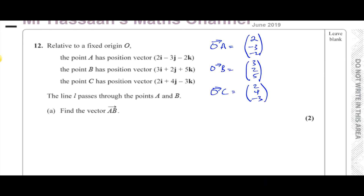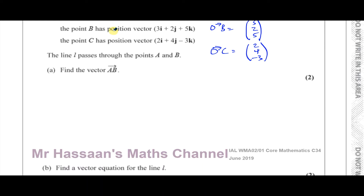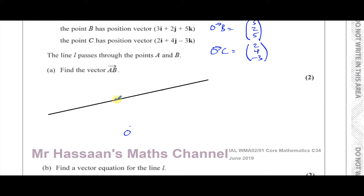Now we need to find the vector from A to B. We know the vectors from O to A and O to B. Since these are three-dimensional we can't draw them accurately, but I'll make a little diagram: O, A, and B, with line L passing through points A and B.